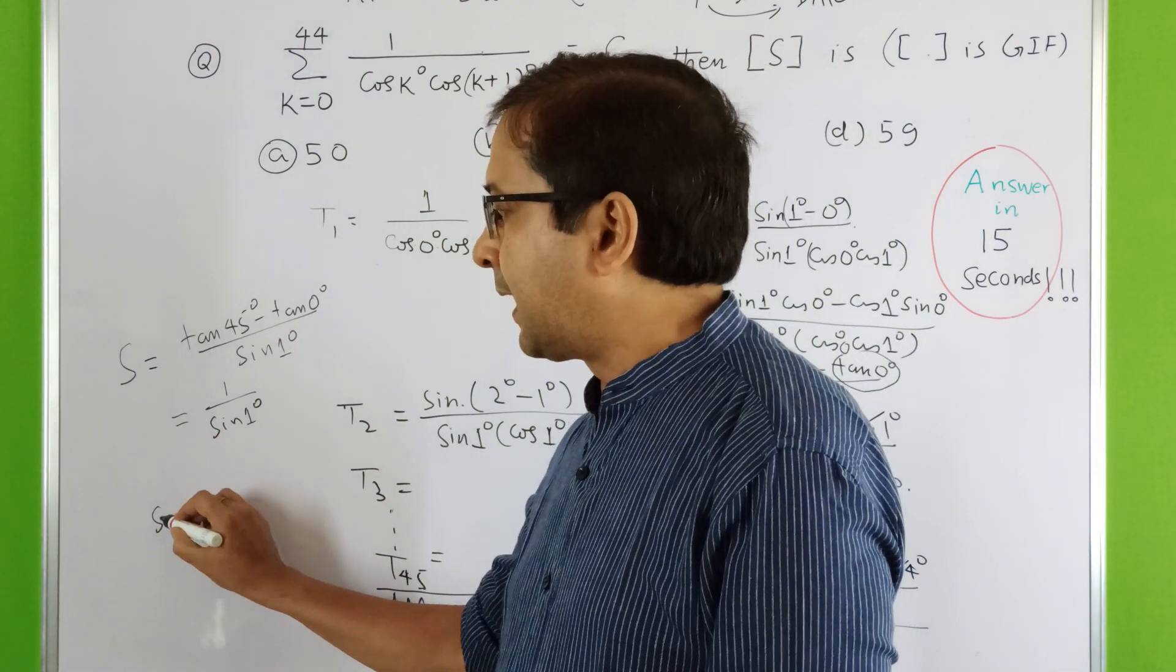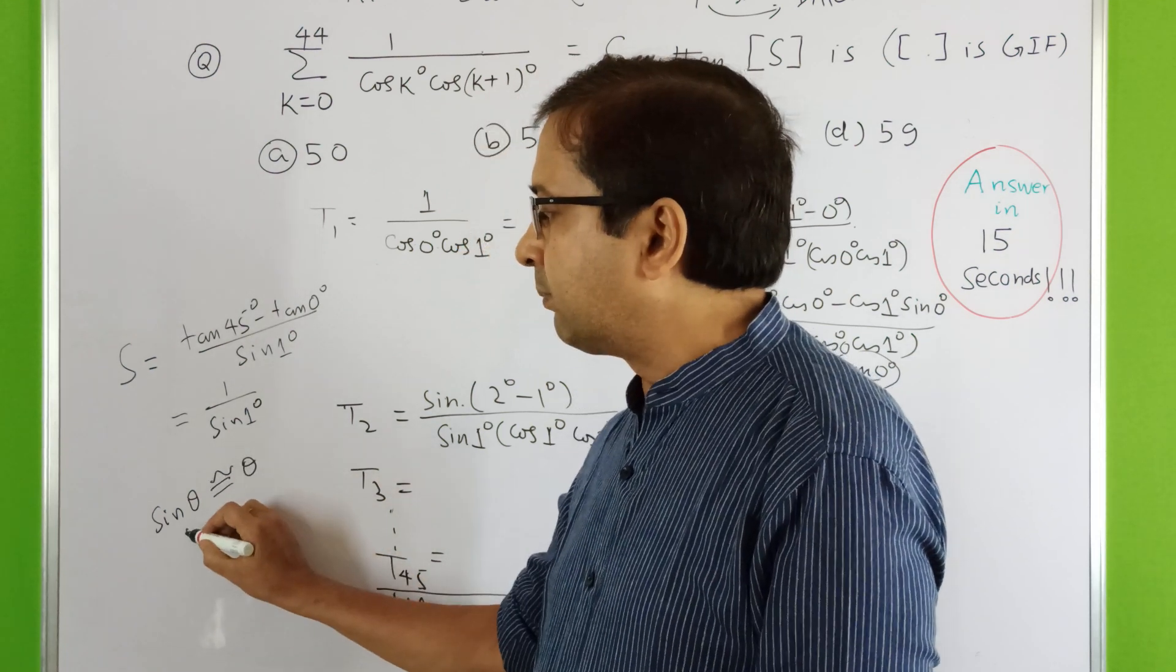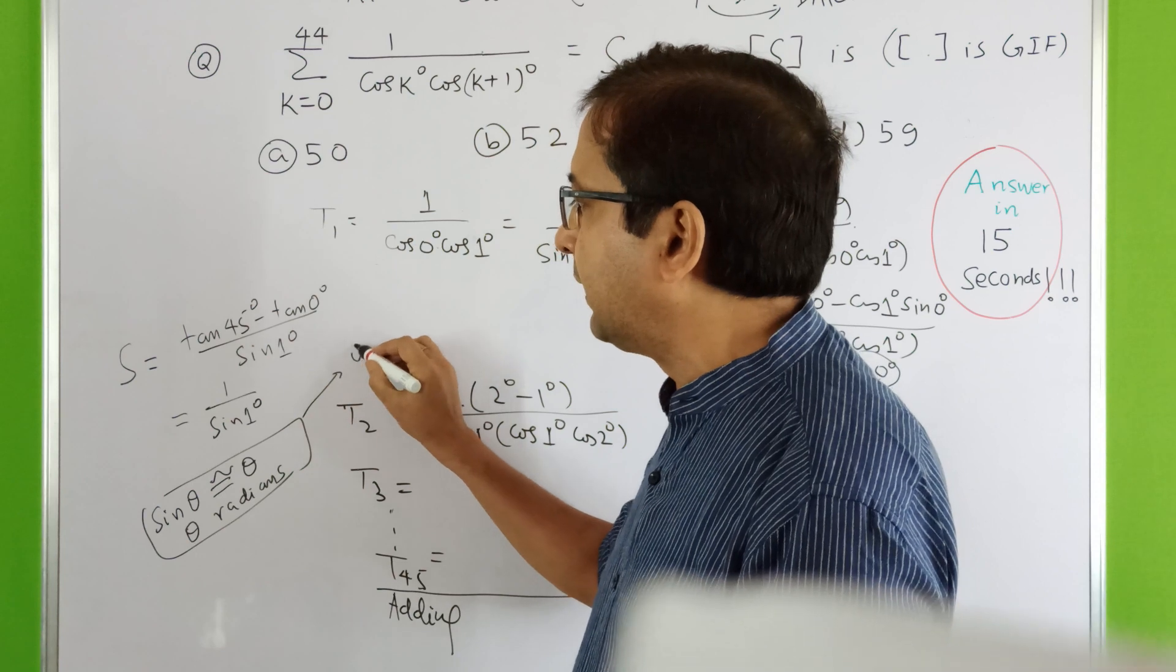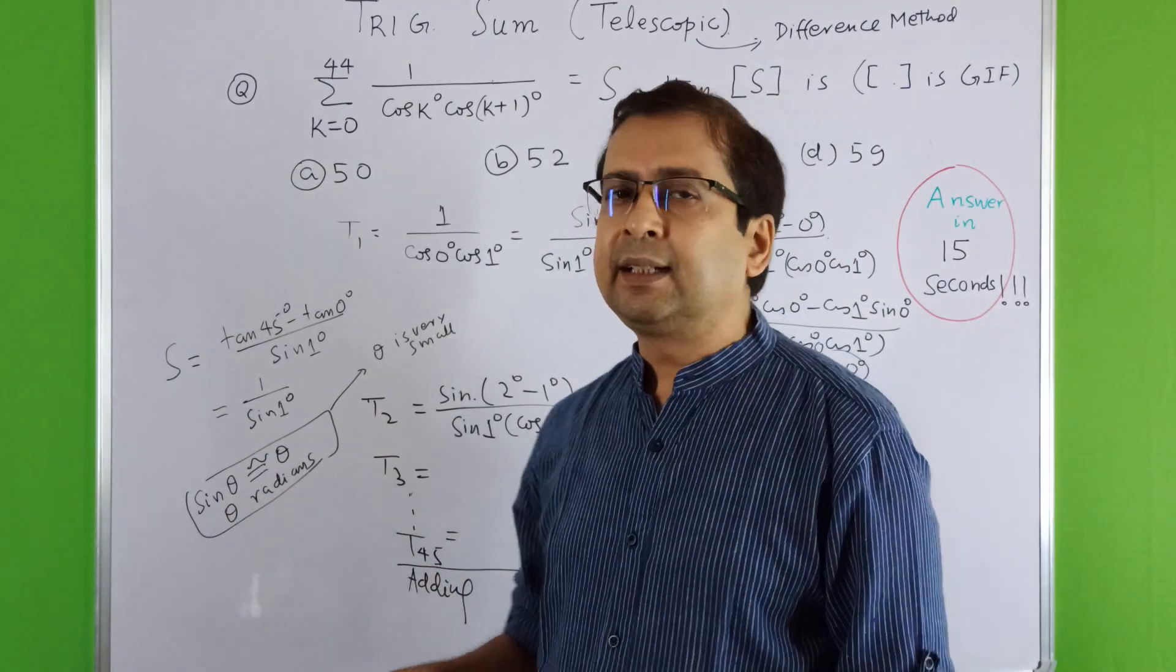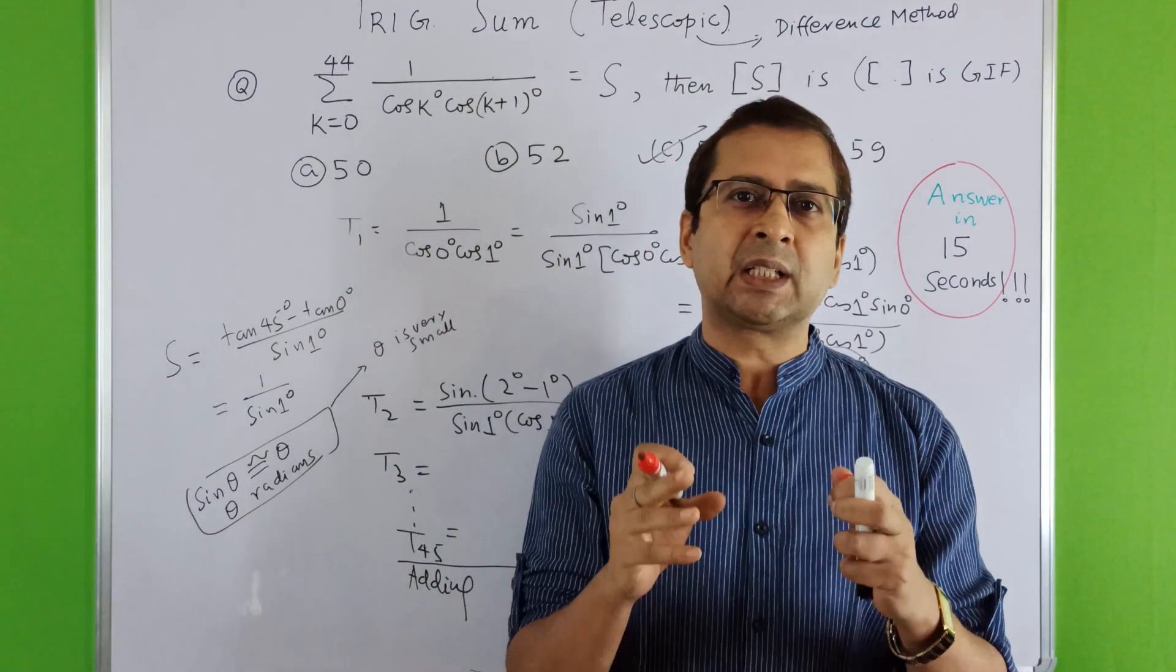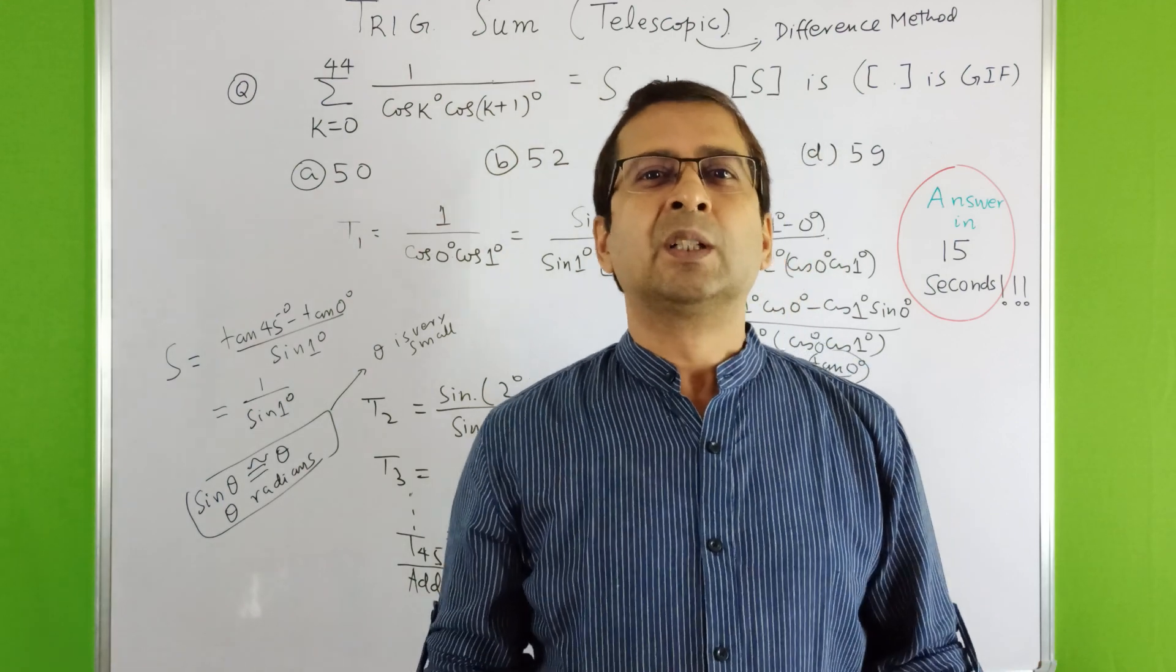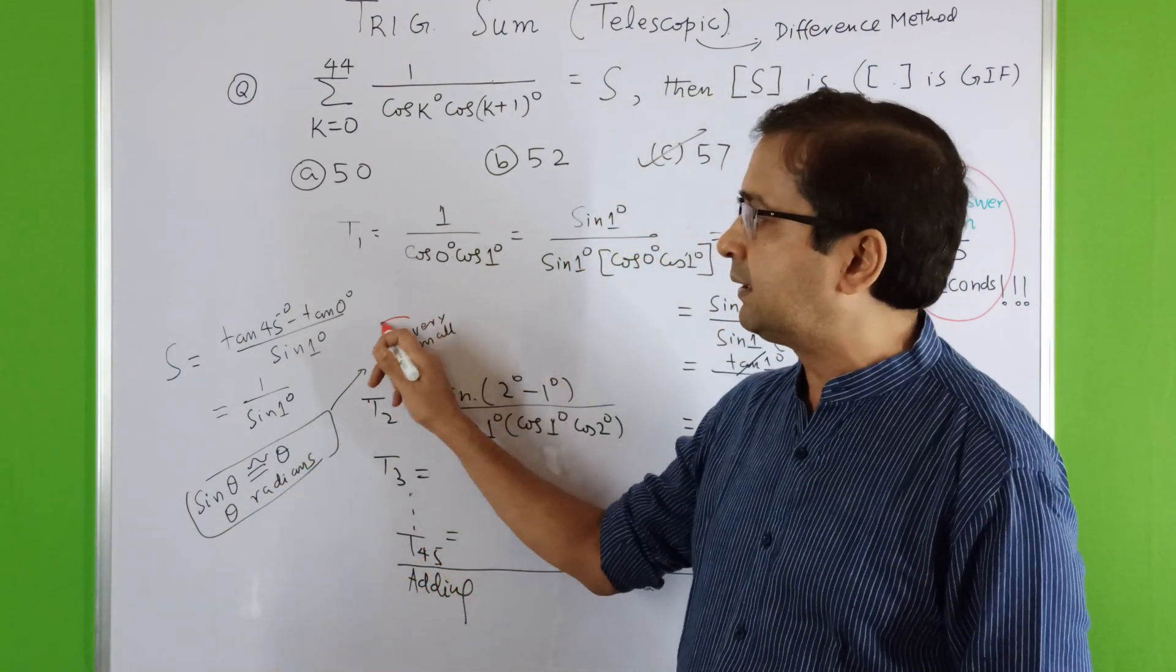The concept I'm telling is: sin theta is nearly equal to theta, nearly approximately equal to theta, when theta is in radians. Pay attention children, here it should be in radians. And theta should be very very small, theta is very very small. This is limit concept - limit tending to 0, sin theta by theta equals 1. This derivation can be seen in limit chapter in class 11 NCERT book.